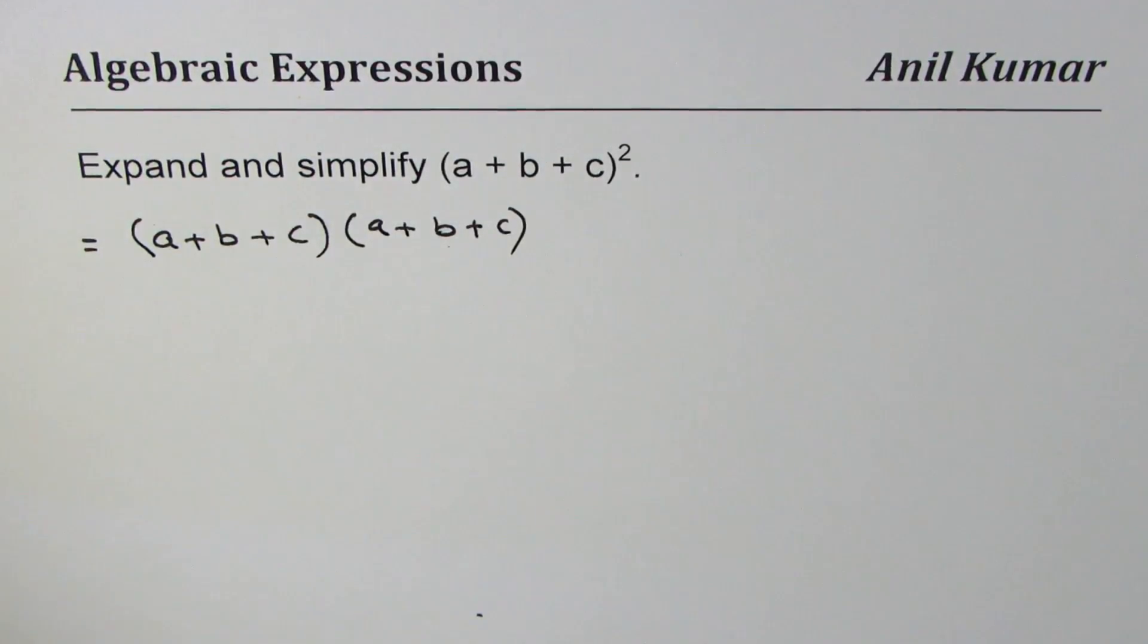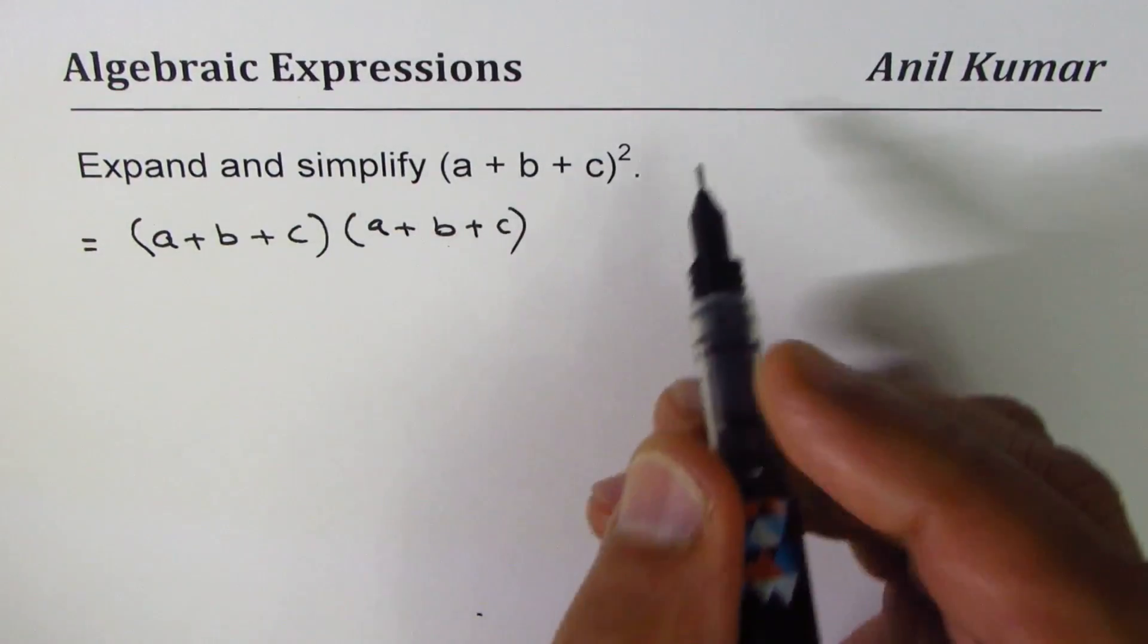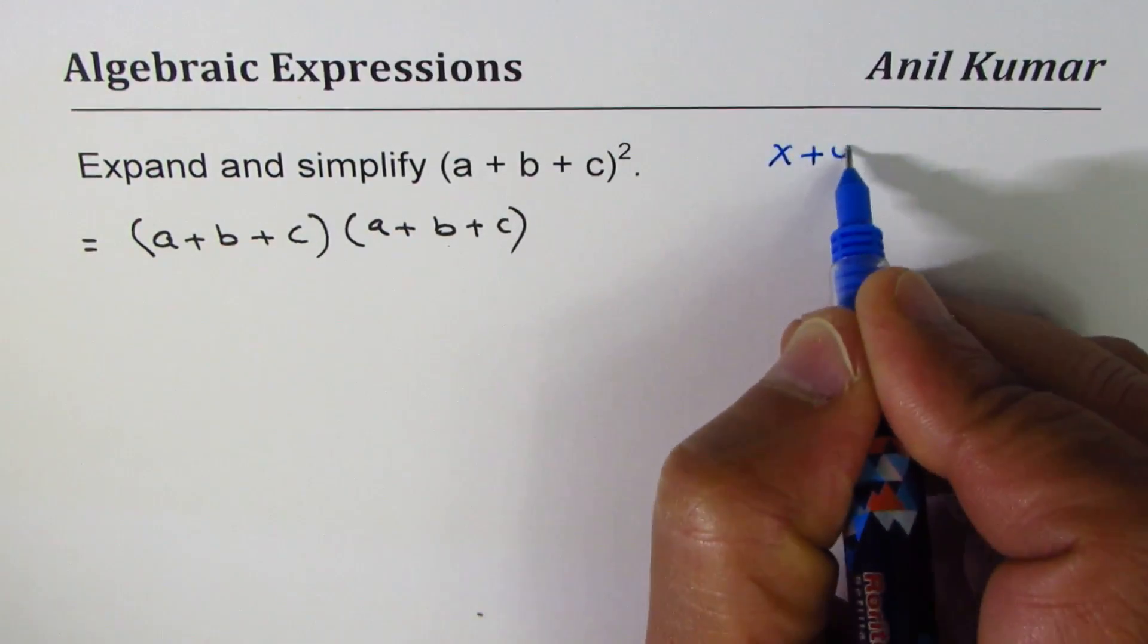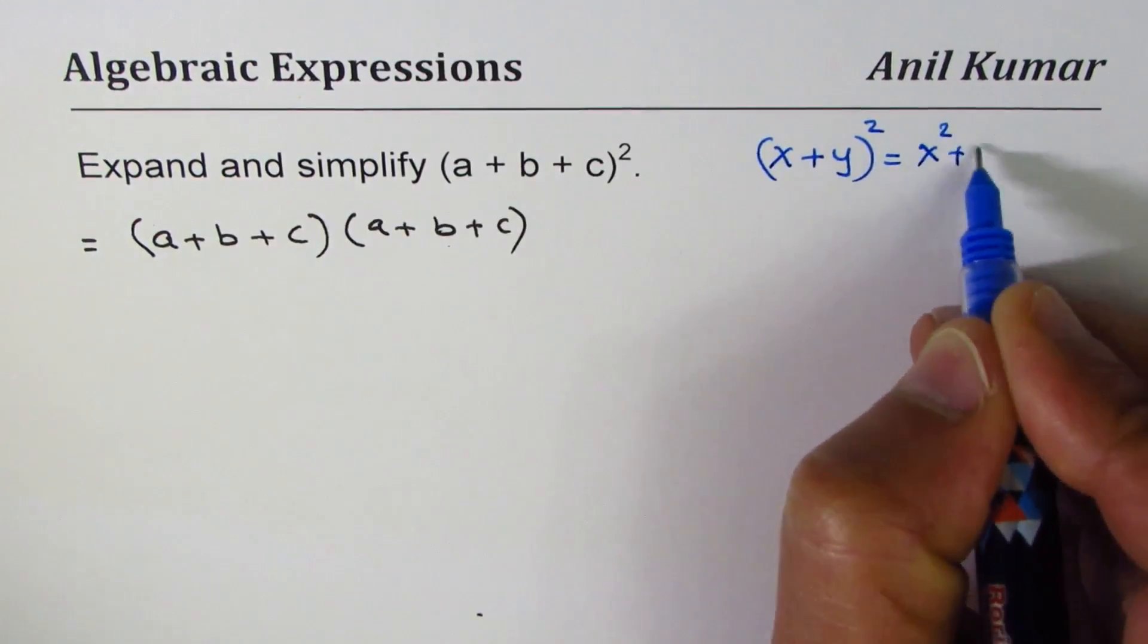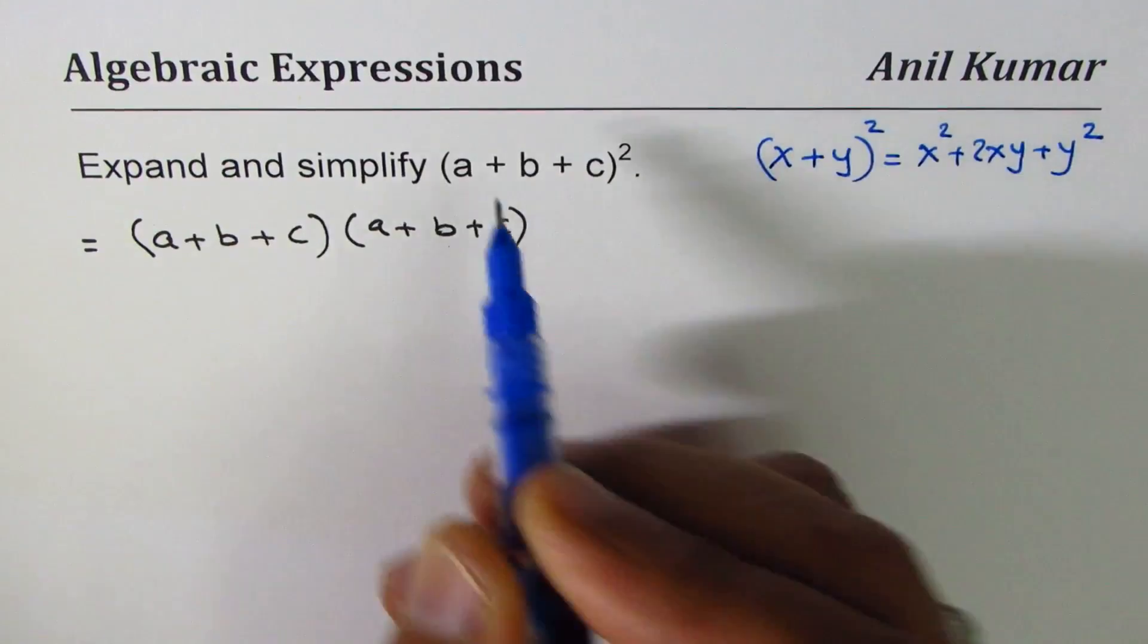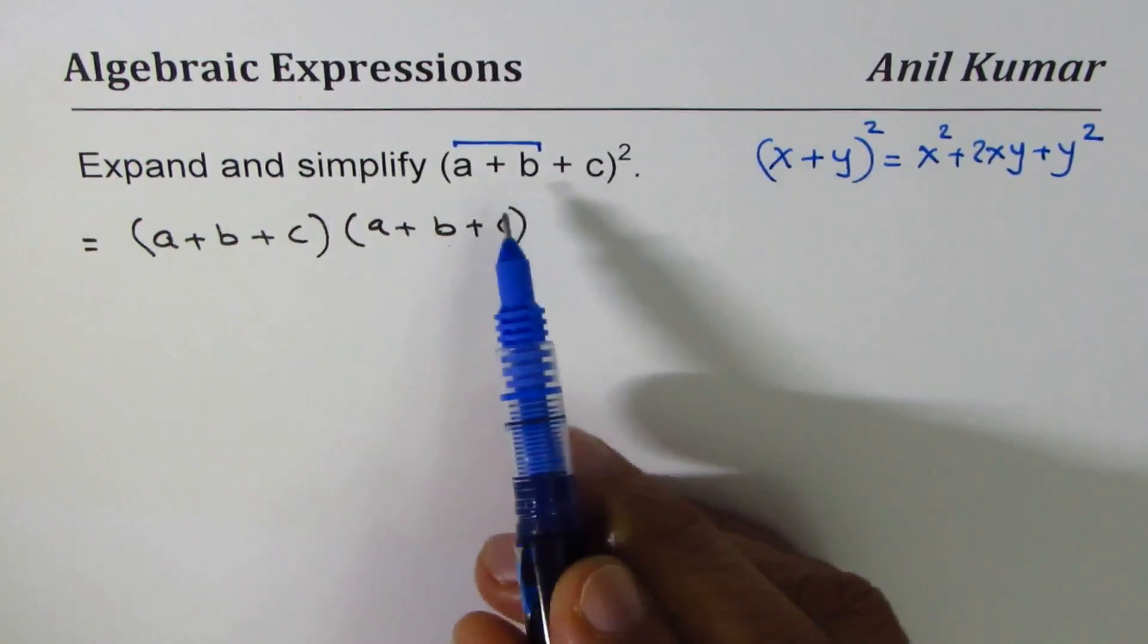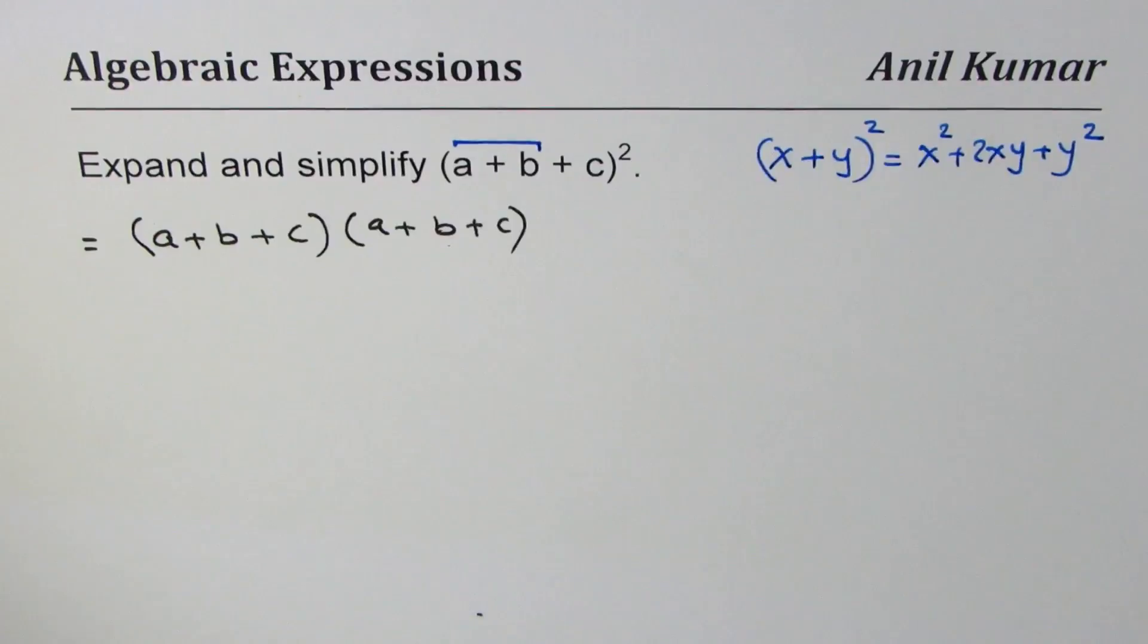This is one way of doing it, perfectly fine. The other way could be we could apply the formula which is, let's say if we have (x + y)² we could write x² + 2xy + y². So you could treat this as x and c as y, expand, and then again expand. So two levels you can do. Either way you're going to get the same result.